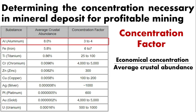Aluminum, which has an average crustal abundance of 8%, has a concentration factor of 4. This means that an economic deposit of aluminum must contain between 3 and 4 times the average crustal abundance — that is, between 24 and 33% aluminum to be economical.